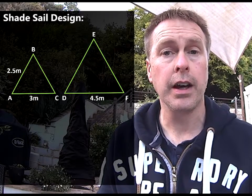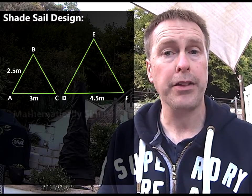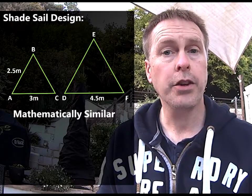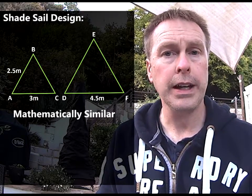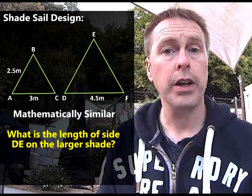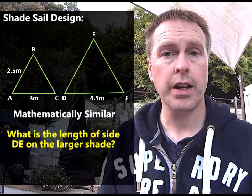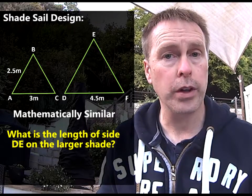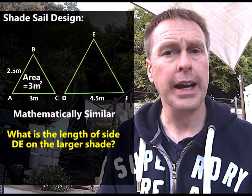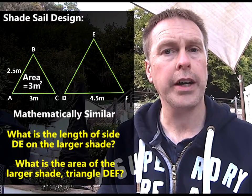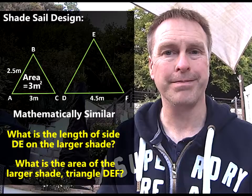Triangle ABC is smaller than triangle DEF but they are mathematically similar. So using all this information, can you tell me what must be the length of side DE on the larger shade? And the second question is this: if the area of the smaller shade is three meters squared, what is the area of the larger shade, triangle DEF? Use some maths and help me solve this problem.